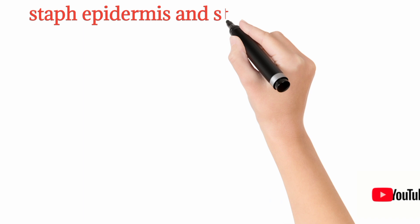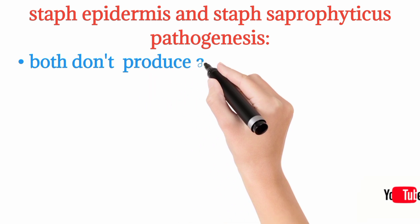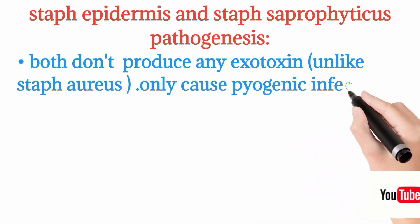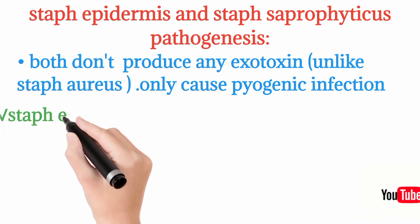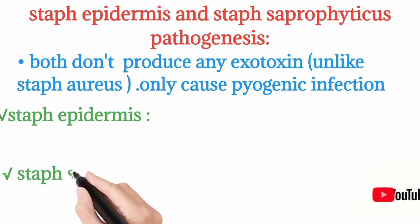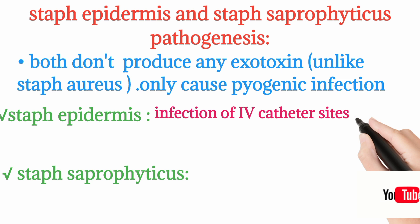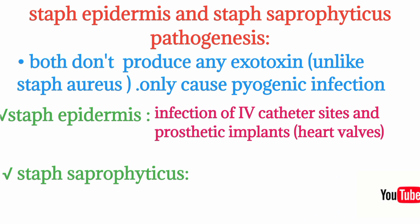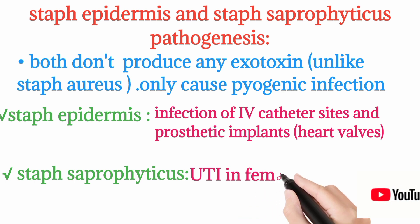Staph epidermidis and Staph saprophyticus do not produce any exotoxins, unlike Staph aureus. Their only mechanism of pathogenesis is pyogenic infection. Staph epidermidis causes infections of IV catheter sites and prosthetic implants such as heart valves. Staph saprophyticus causes urinary tract infections (UTI) in females, with sexual activity as a predisposing factor.